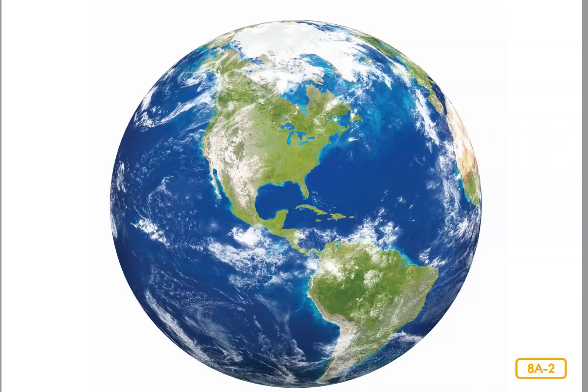More of the earth is covered in water than land, and most of that water is saltwater in oceans and seas. Oceans are huge areas of saltwater that stretch all around our planet and are home to almost half of the world's species of animals and millions of different plants. The water in the ocean comes from rain as well as from rivers and streams.